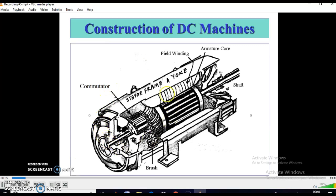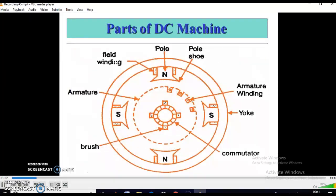DC machines generally consist of four parts: steel magnets, armature, commutator, and brush. Steel magnets consist of yoke, pole core, and magnetic coils. These are the various parts of DC machines.